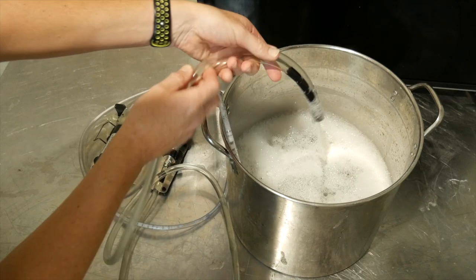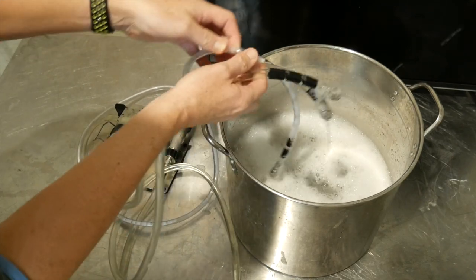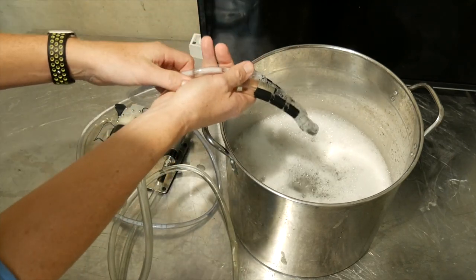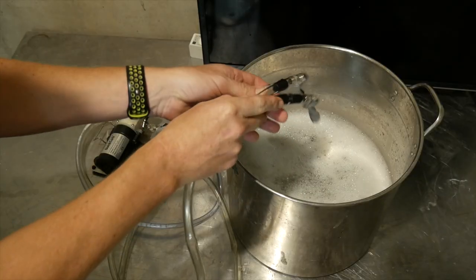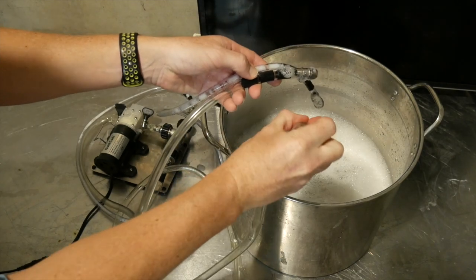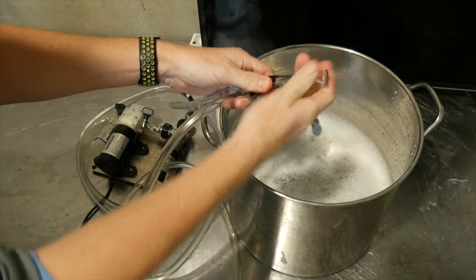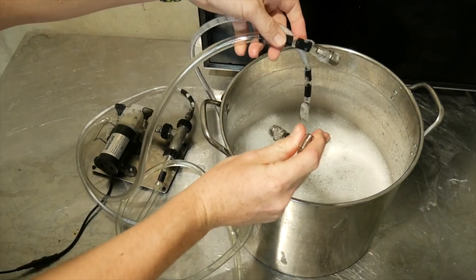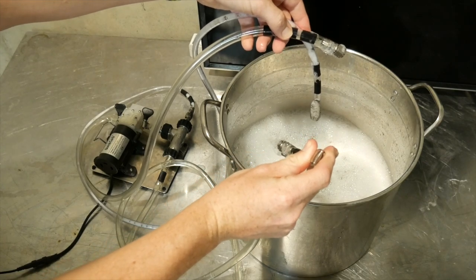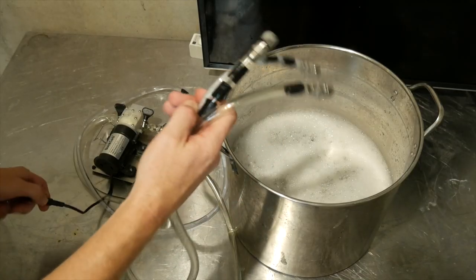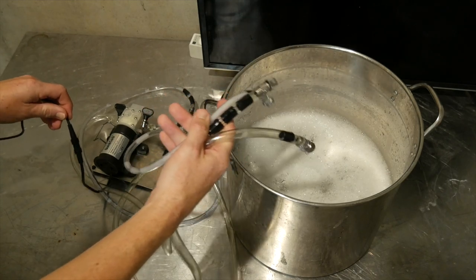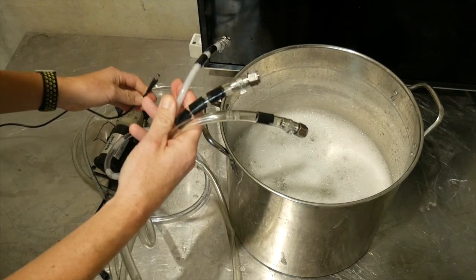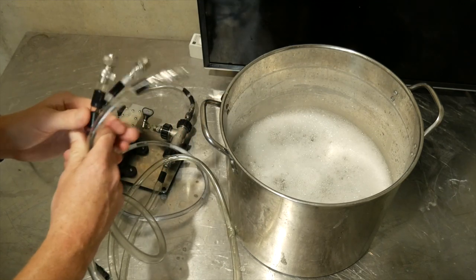Now everything's nice and sanitized, we'll pull out all of the hoses and let the system drain. And again we will kink the saturation hose just to expel anything out of the CO2 hose here. Then we'll turn off the pump. Unfortunately there's no switch on this, so it's simply a case of disconnecting. Okay, we're all sanitized.